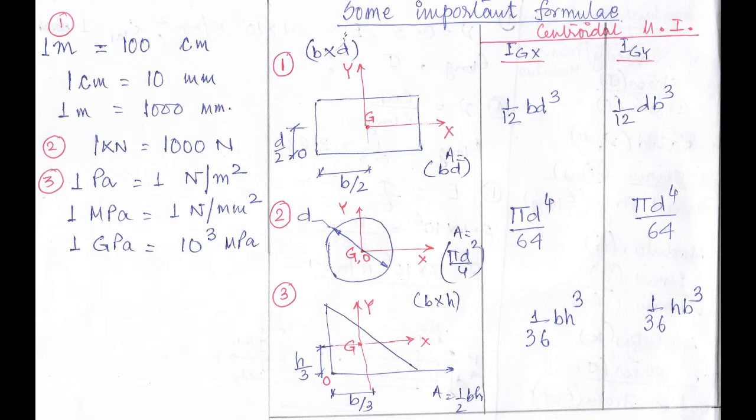This is a rectangle of length b and width d. The centroid, shown as capital G, is located at b/2 and d/2 — that is, half of its length and half of its width. The area of a rectangle is b × d. The centroidal moment of inertia about the x-axis is (1/12)bd³, and about the y-axis is (1/12)db³.